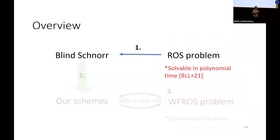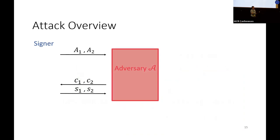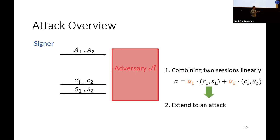I will now describe how one can break the one-more unforgeability of blind Schnorr by solving the corresponding ROS problem. Consider an adversary that starts two concurrent signing sessions. Here I use subscript 1 to denote the first signing session and subscript 2 to denote the second. First, I will show how we can generate a signature which is a linear combination of two sessions.